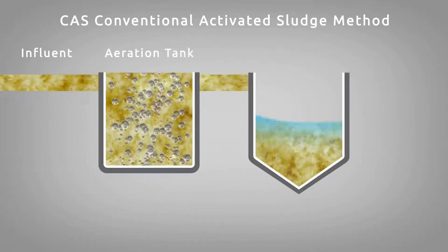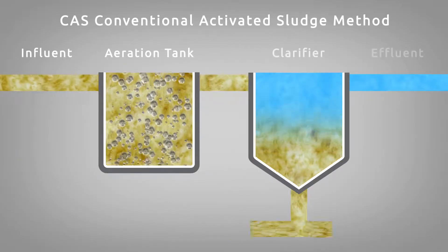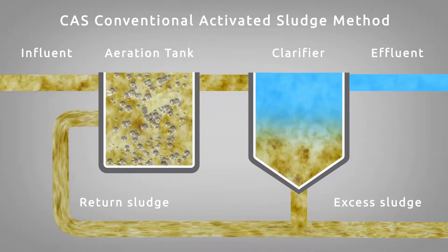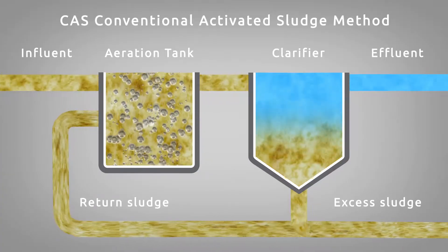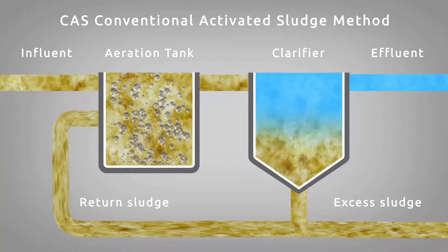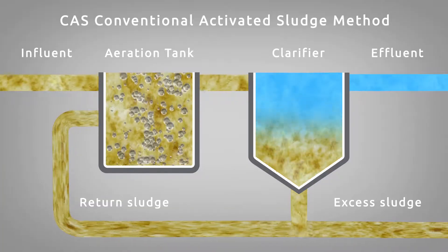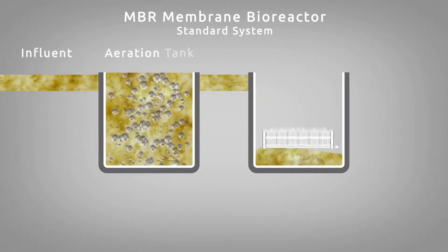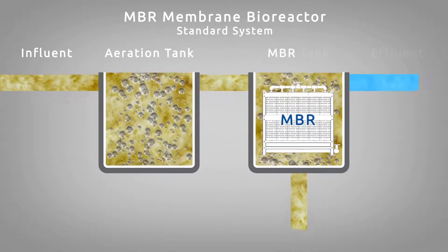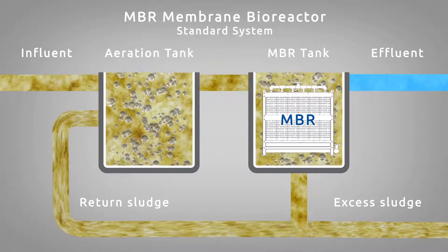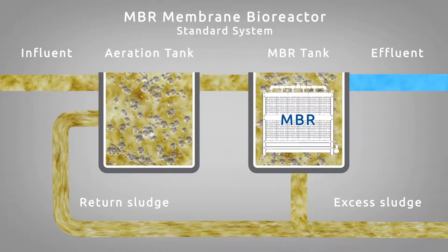In the conventional activated sludge treatment method, sludge is separated into solids and liquid in a settling tank. This is called clarification. The innovative MBR technology combines activated sludge treatment with solid-liquid separation by means of microporous membranes, in place of the traditional separation by secondary clarification.